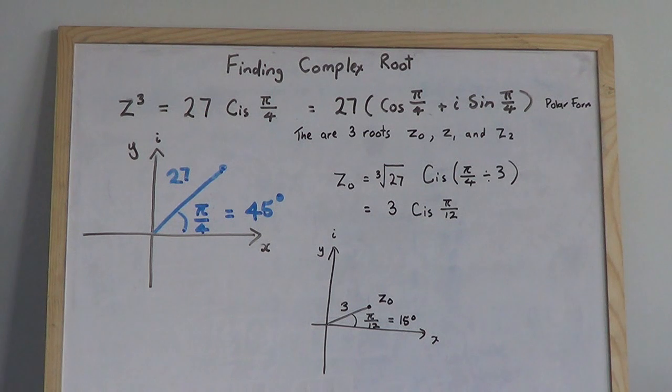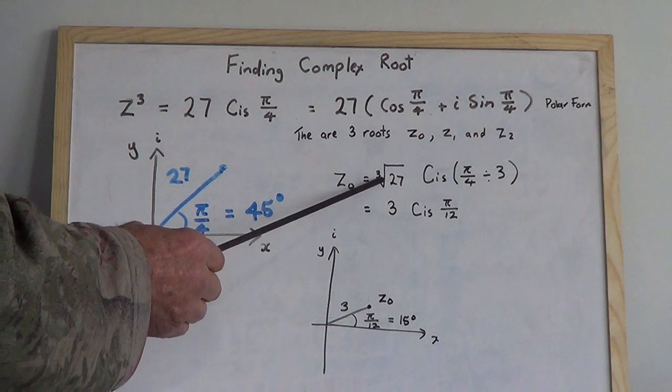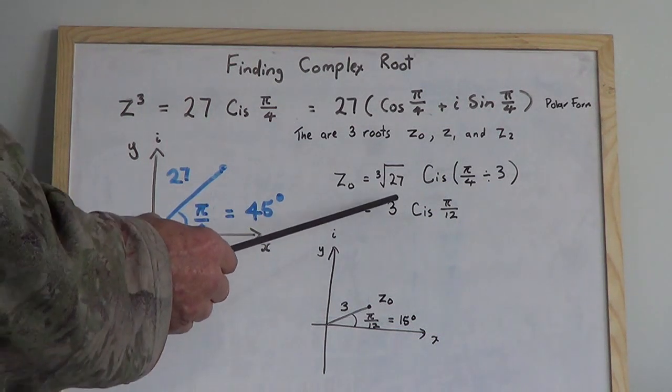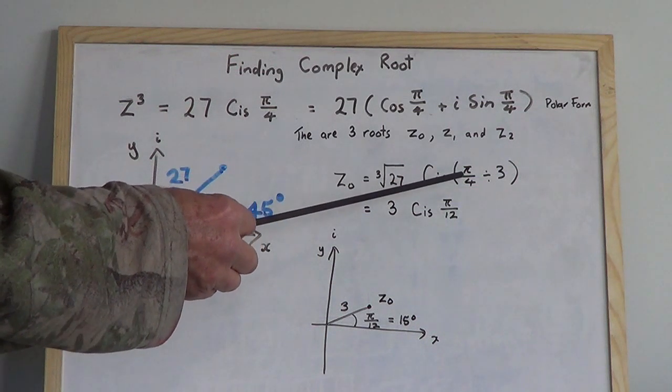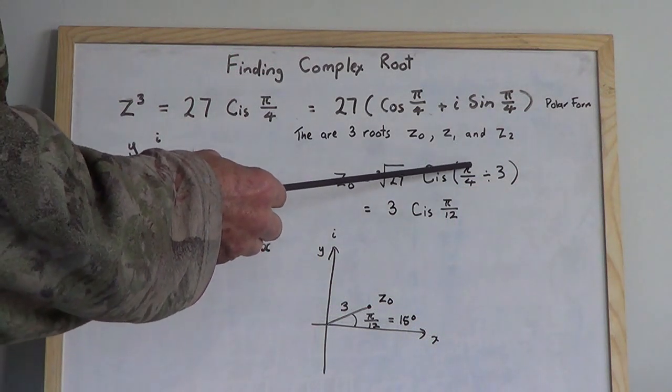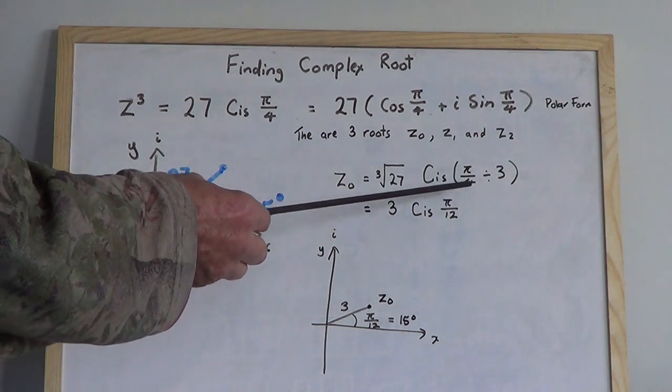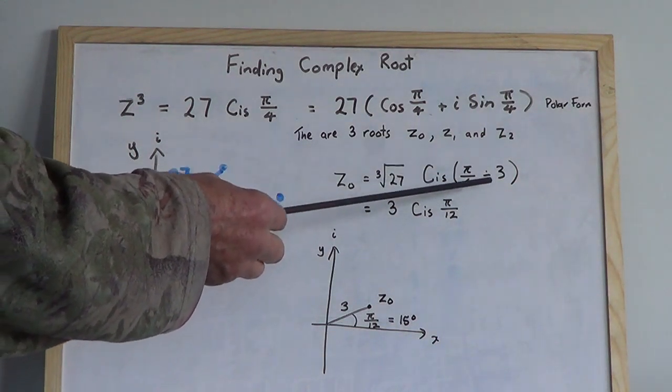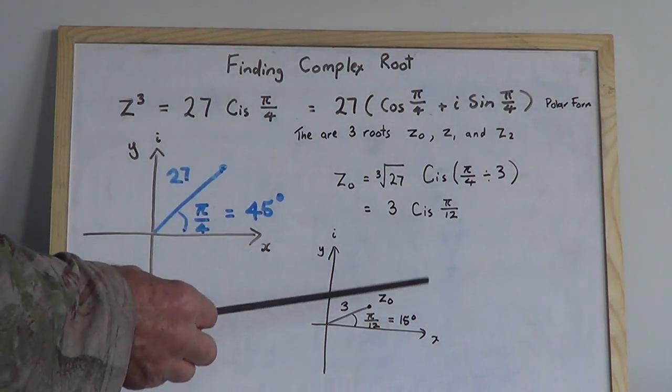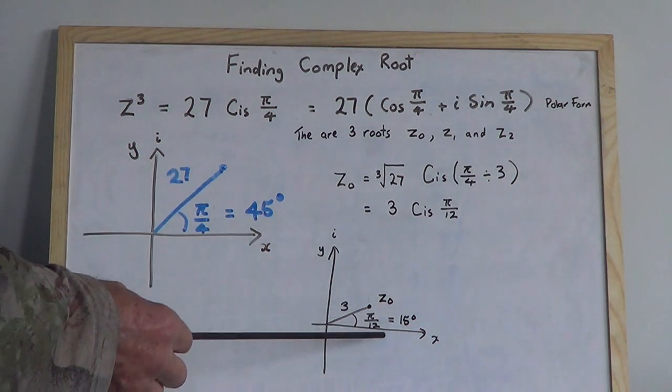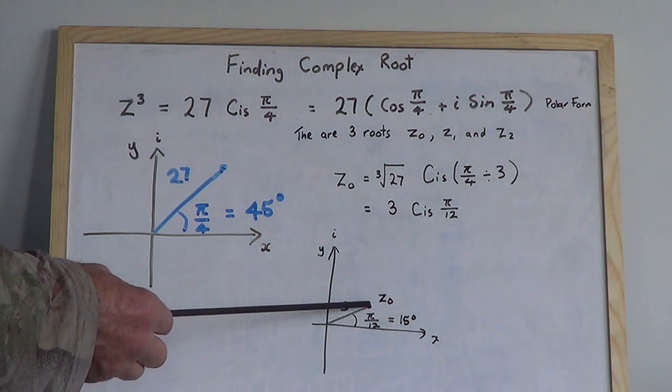Now this is how you work it out. First of all, you deal with the 27 and you just find the cube root of 27, which is 3. Then using De Moivre's theorem, you divide this angle by 3. If you divide π/4 by 3, you get π/12. That was 45 degrees; when we divide 45 by 3, we get 15 degrees, which is π/12. And there's the first root, which is z₀.